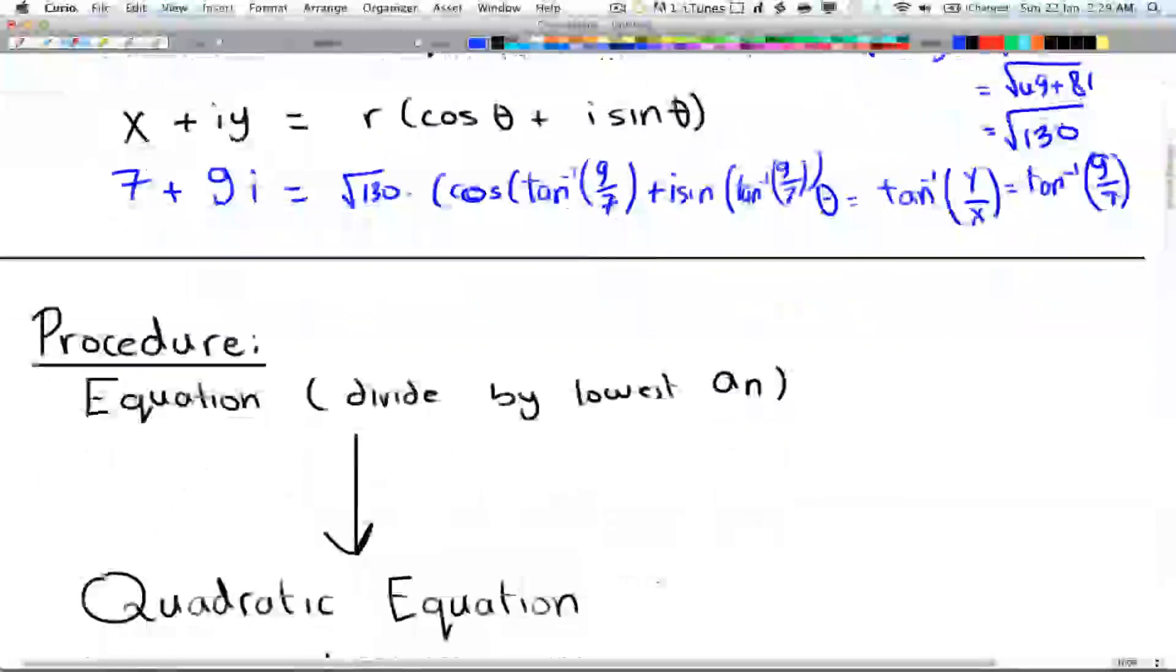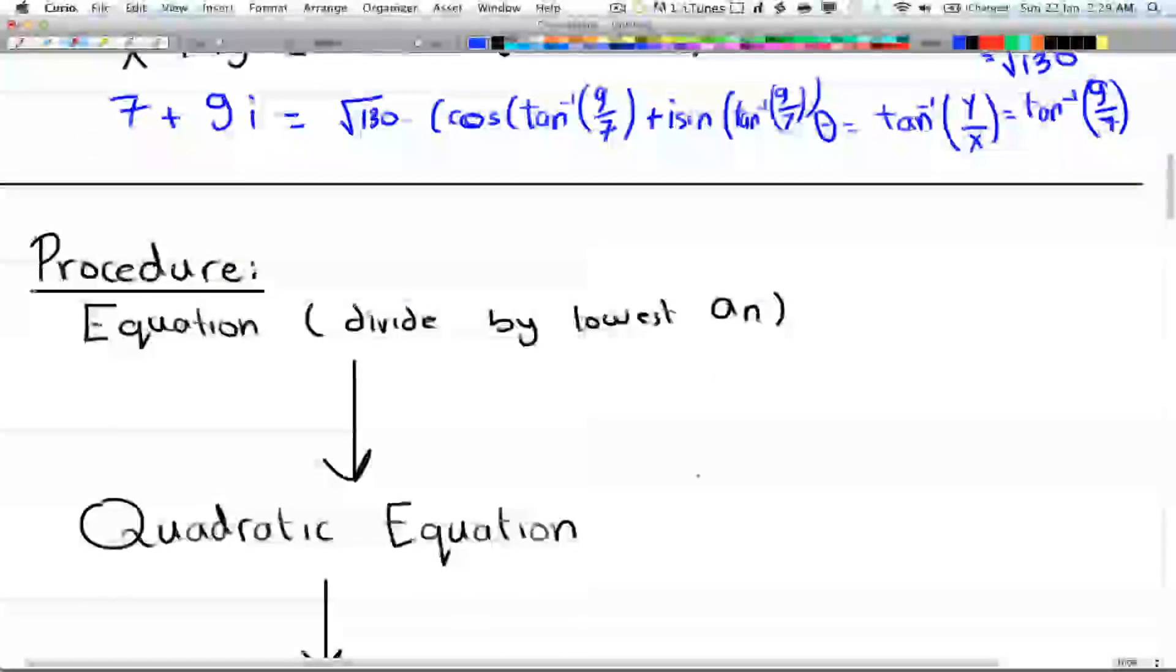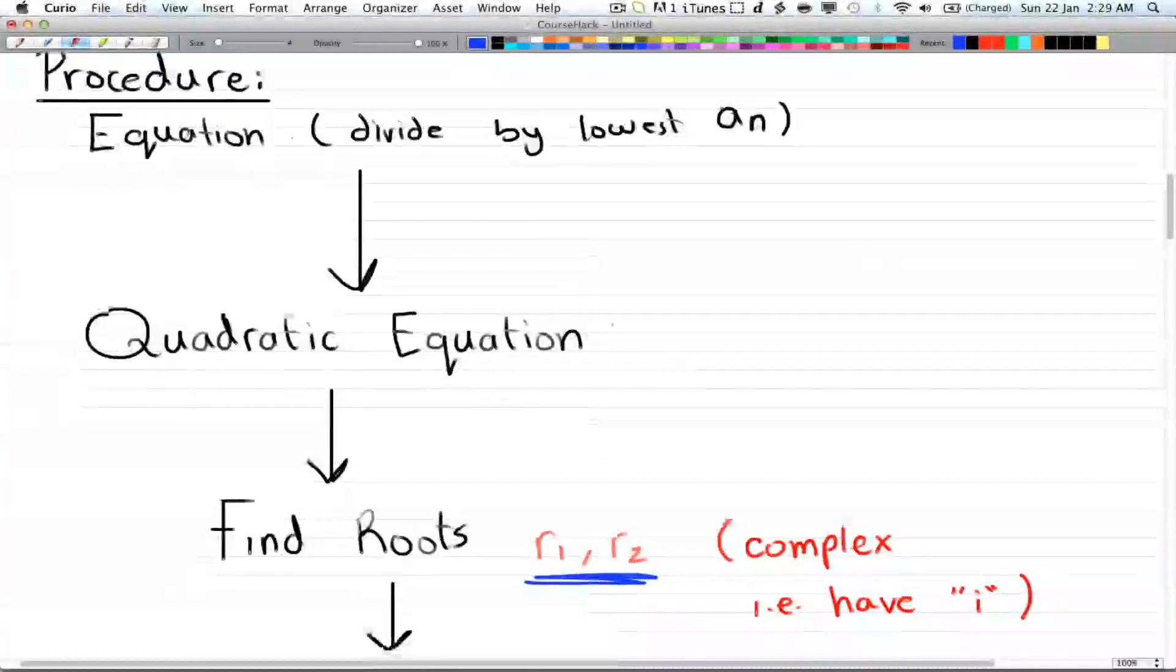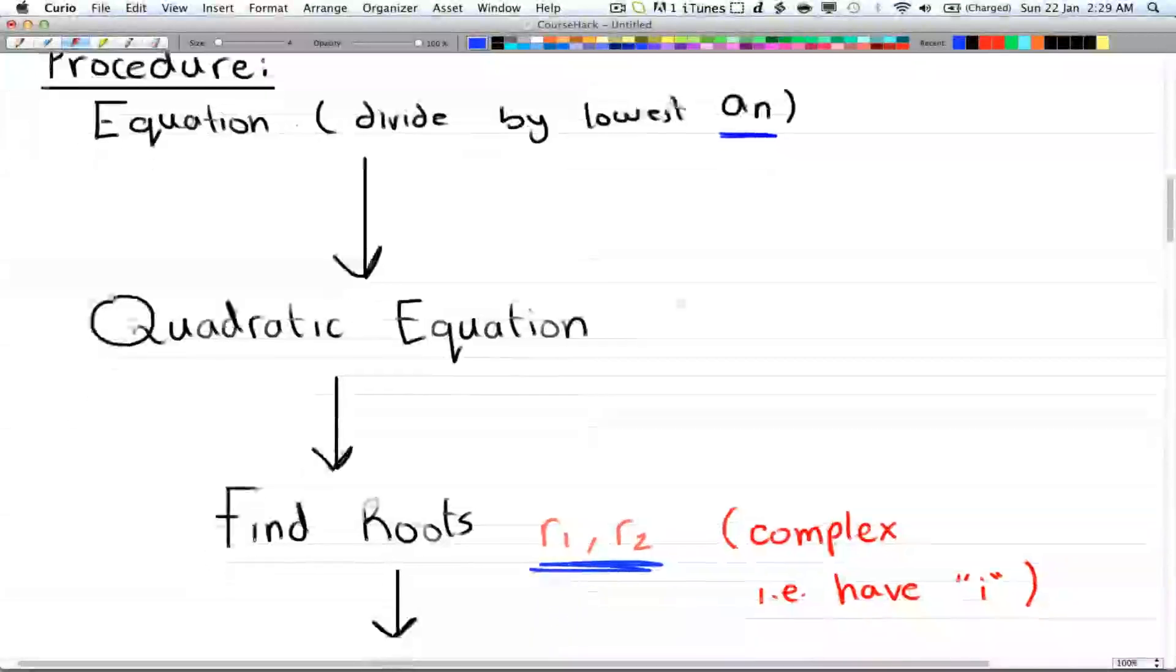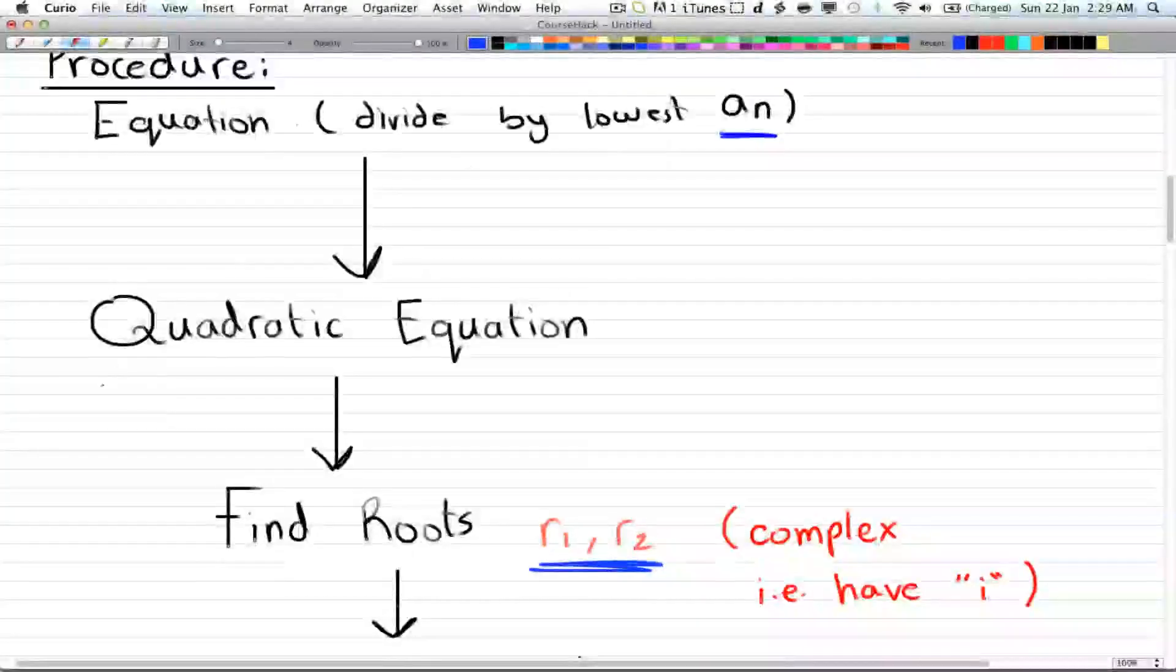All right, so here's the procedure for how to solve these problems. You're going to have an equation, as always. You're going to divide by the lowest a_n. So that's the first step. And that will lead to a quadratic equation.